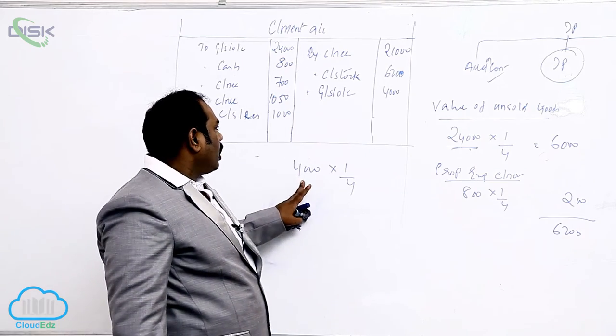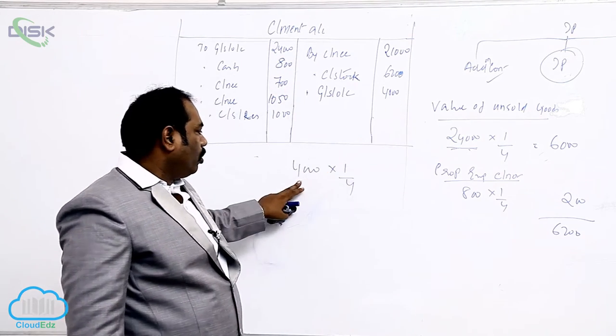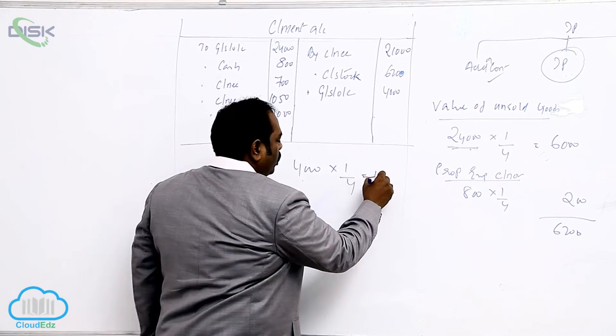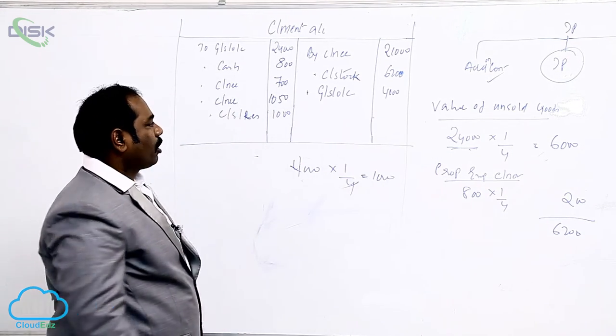So out of total extra profit, what is the extra profit we are adding for the entire stock? 4,000. What is the stock left? One-fourth. That comes to 1,000. That is consignment stock reserve.